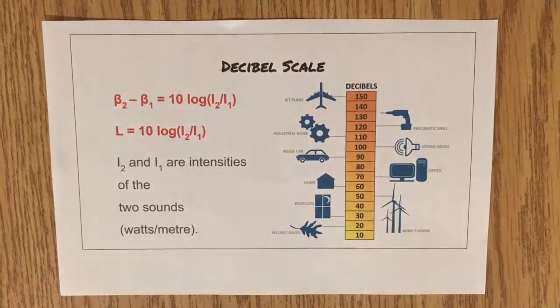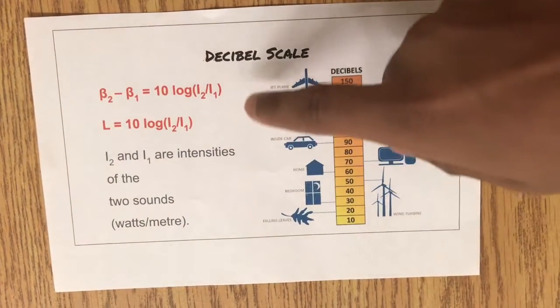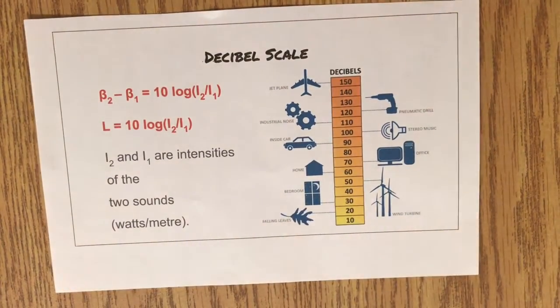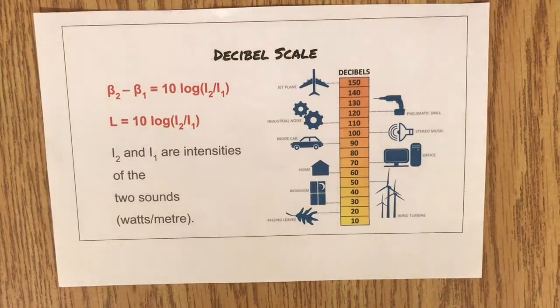And finally, the decibel scale, where it uses beta 2 minus beta 1 equals 10 log i2 over i1, and L equals 10 log i2 over i1, where i2 and i1 are intensities of the two sounds in watts per meter.